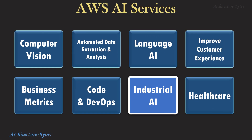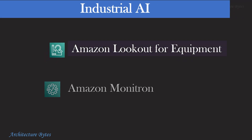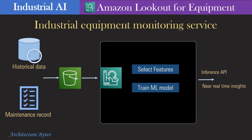Next, let us look at Industrial AI Services. Here we have Amazon Lookout for Equipment and Monitron. Amazon Lookout for Equipment is an industrial equipment monitoring service that helps with predictive maintenance. It examines historical data from sensors like temperature, flow rate, pressure, RPM, vibration, etc.